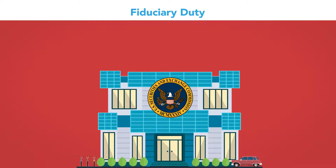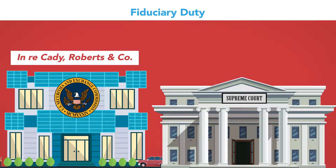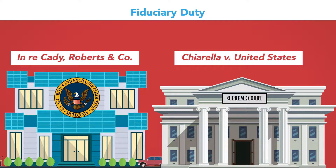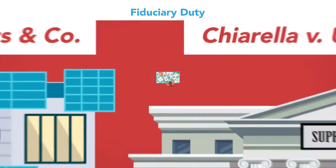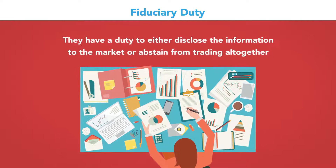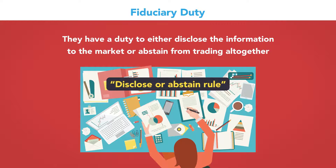As the SEC held in In re Cady, Roberts and Company, and the Supreme Court later recognized in the seminal insider trading decision Chiarella v. United States, when corporate insiders gain access to non-public information, they have a duty to either disclose the information to the market or abstain from trading altogether. This rule is known as the Disclose or Abstain Rule.